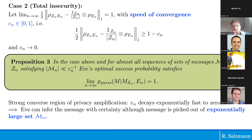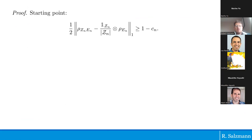Connecting back to the strong converse of privacy amplification: c_n decays exponentially fast to zero, so Eve can infer the message even when it's picked from an exponentially large set, given only knowledge of the subset and her quantum side information plus access to the encrypted message. With the decoupling error blowing up, she can perfectly identify the message.